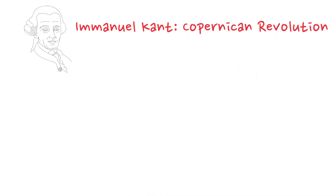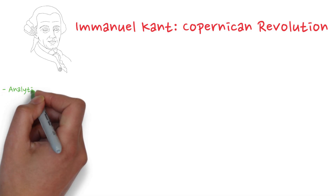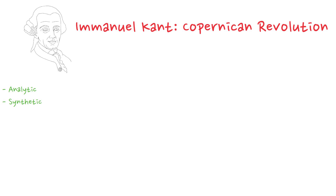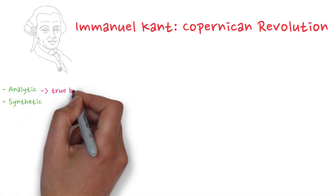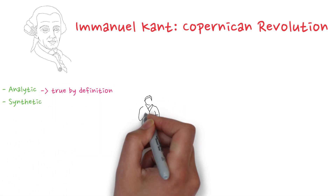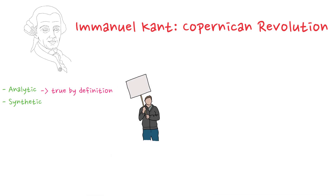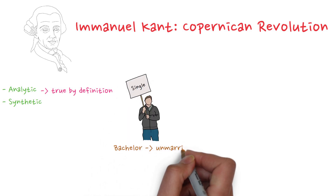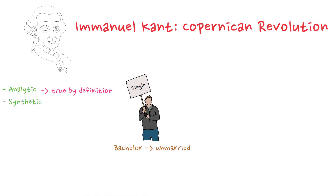To start, Kant distinguished between two types of knowledge statements: analytic and synthetic. Analytic statements are those that are true by definition, like 'A bachelor is unmarried.' The truth of this statement is self-evident, because 'unmarried' is already contained in the definition of 'bachelor.'